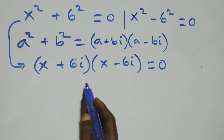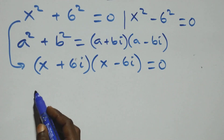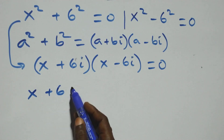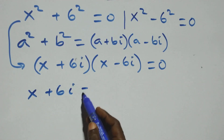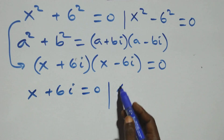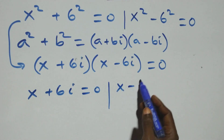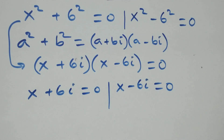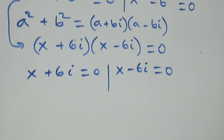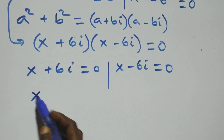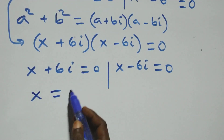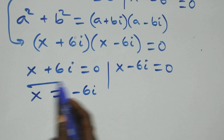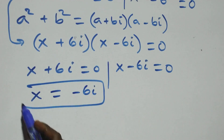Then we have two possible cases. The first term: x + 6i equals 0, giving x equals −6i, which is a complex solution.